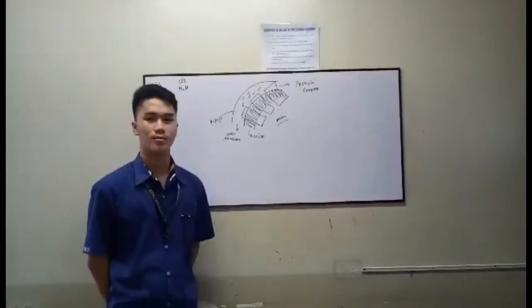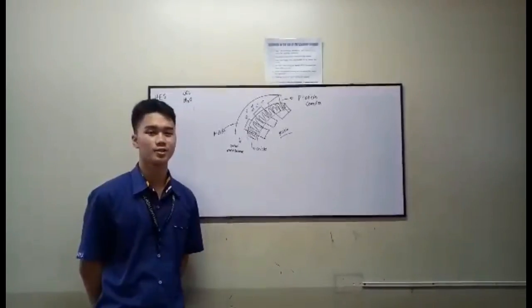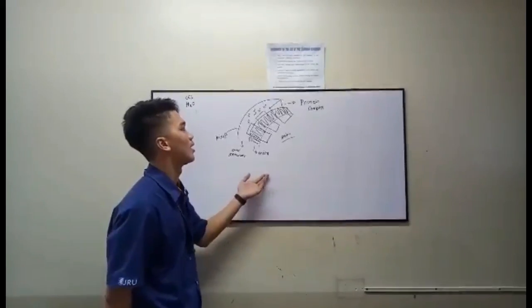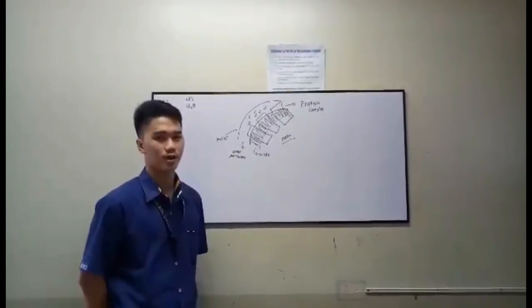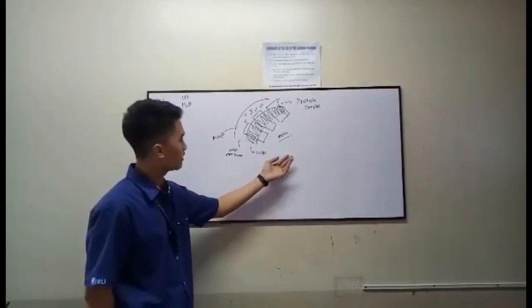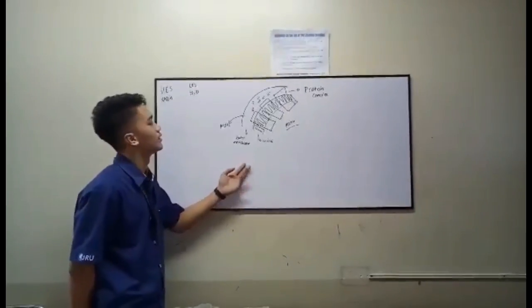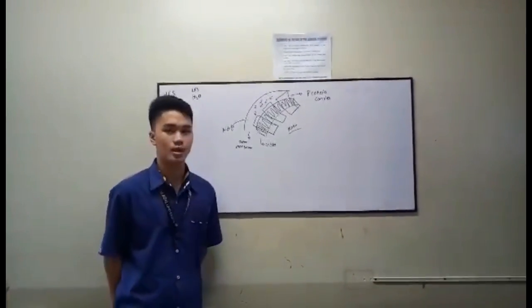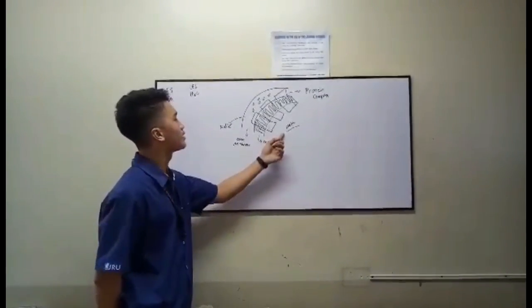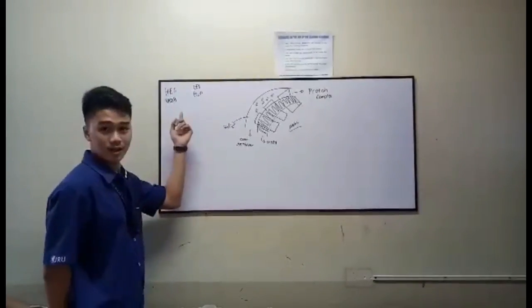The released energy is going to be used to pump hydrogen protons in the cristae. Here we have a diagram of the mitochondria and its parts. We have the matrix, where the NADH are located, and we have the cristae. We also have the outer membrane. In the cristae, we have protein complexes, which are activated because of the high energy state of NADH.